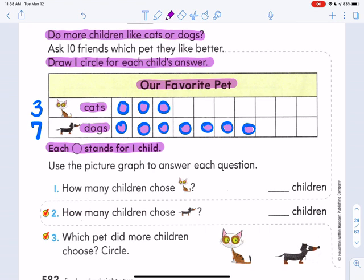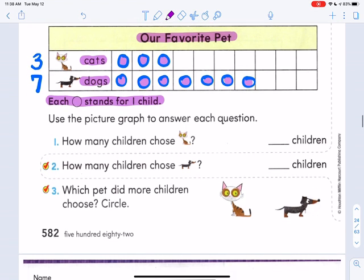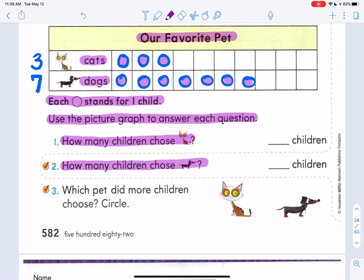Okay. Now, I'm going to slide this up. We're going to answer these questions with this picture graph. Here are the directions. Use the picture graph to answer each question. Question one. How many children chose cats? Question two. How many children chose dogs? And then question three. Which pet did more children choose? Circle. I want you to answer those questions. Pause the video. And then start the video back up when you're done.